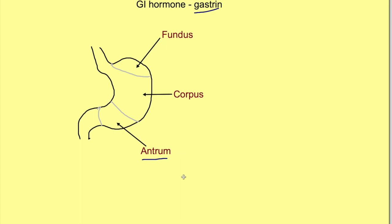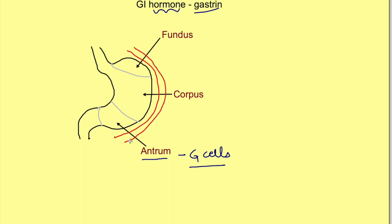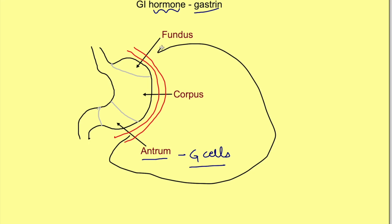The hormone gastrin is released from the antrum of the stomach. In the antrum, there are certain cells known as G cells which release the gastrin hormone. Being a hormone, it is released into the blood from these G cells, and via blood it travels and reaches the fundus part of the stomach where the parietal cells are present.